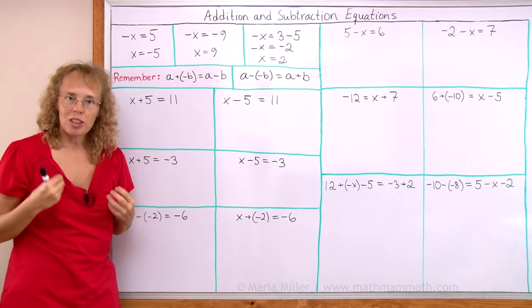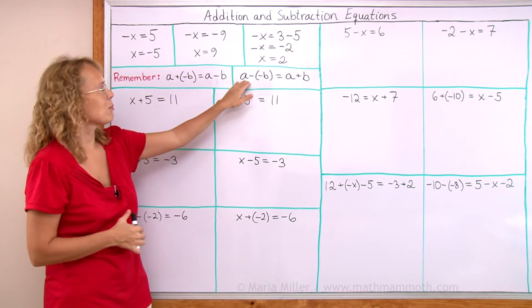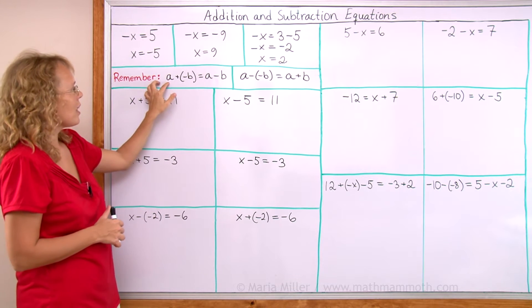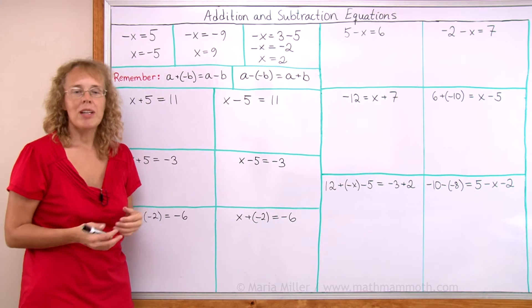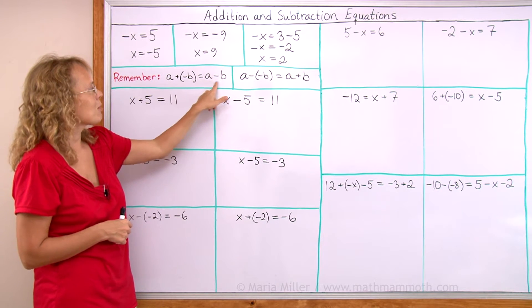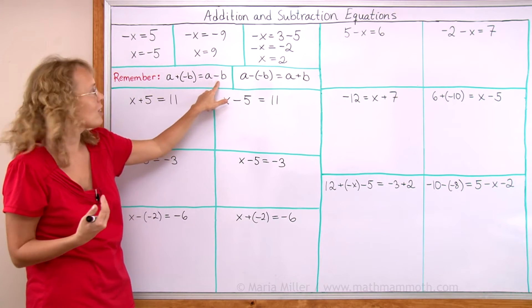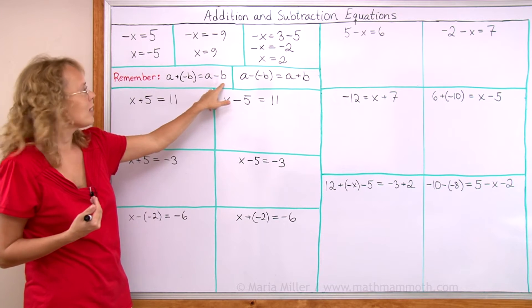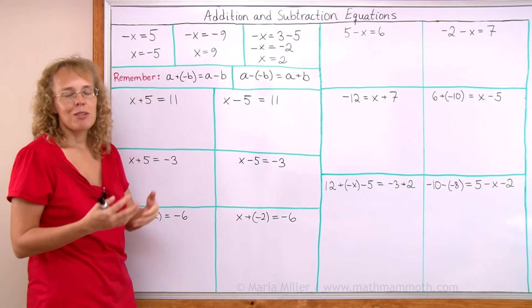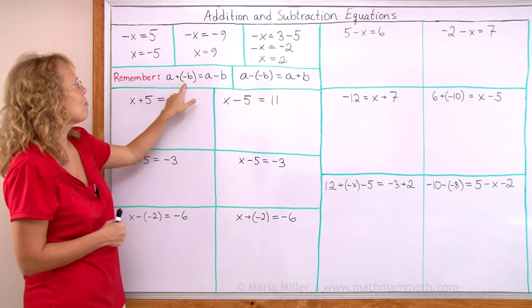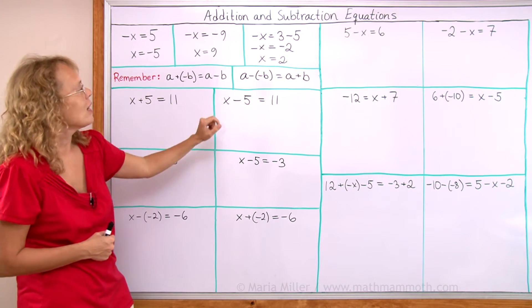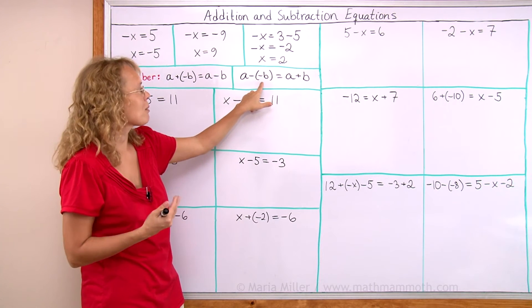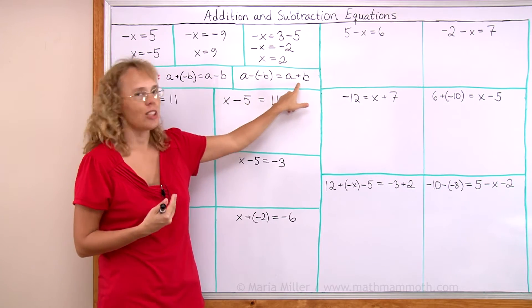One important principle to keep in mind: a plus negative b is the same as a minus b. Or stated another way, any subtraction a minus b can be changed into an addition of the opposite — instead of subtracting b, you can add the opposite of b. It works the other way too: if you're adding a negative number, you can change it into a subtraction. And there's the double negative: if you are subtracting the opposite of b — subtracting something negative — those two minuses can be changed into a plus.